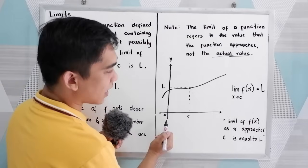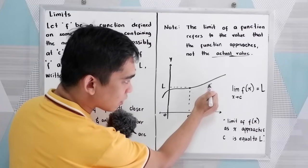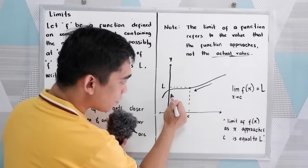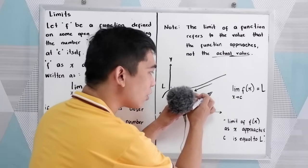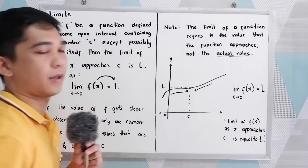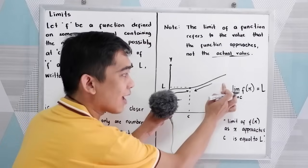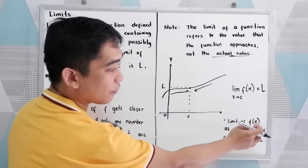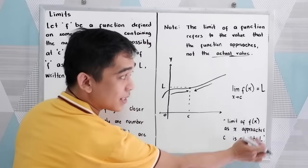So we have here our constant. As we draw closer and closer to our constant, we have two areas: from right going to left, then from left going to right. As we draw closer and closer to our constant, that will give us our L. So the limit of f(x) as x approaches c is equal to our L.